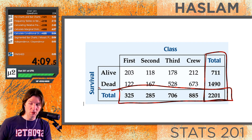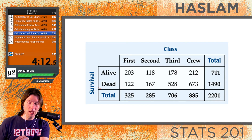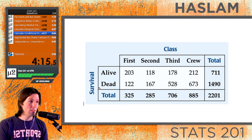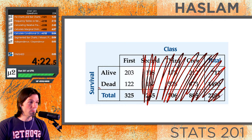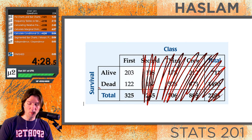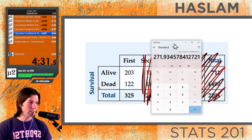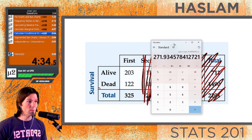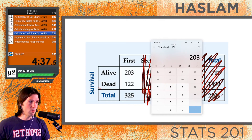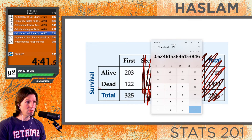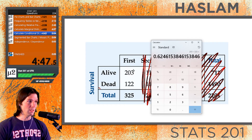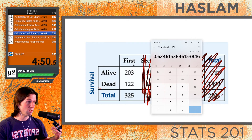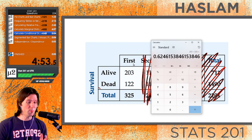When we look at the conditional distribution, it's important to know how to phrase this. We ask a question like: given somebody was in first class, we forget about everything else and focus only on the people in first class. Given someone was in first class, what is the probability they survived? We'd have 203 people out of 325, and that is the conditional distribution given someone was in first class. It sets a condition for one variable.